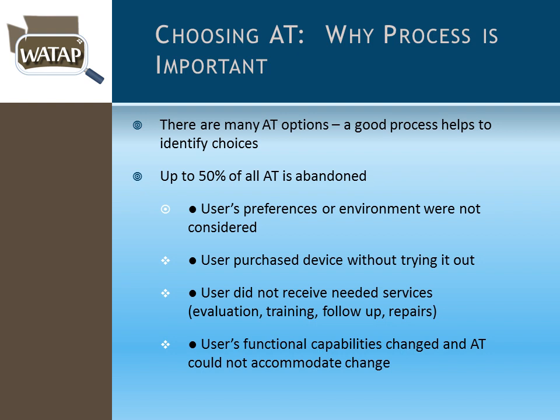Up to at least half of assistive technology is abandoned for various reasons. The biggest reasons are typically that the person was not provided with a good AT evaluation to begin with, and their functional needs weren't addressed early in the process. We advocate that we can minimize this abandonment rate if individuals are provided with a solid AT assessment and are able to try the equipment in the various environments where they'll use it. That's where state AT programs can be useful.